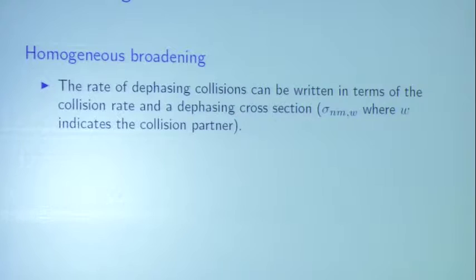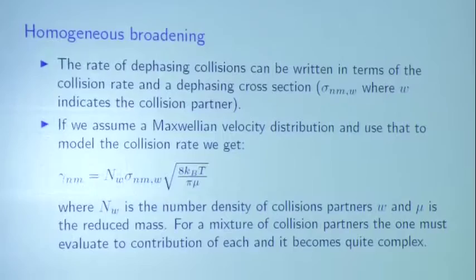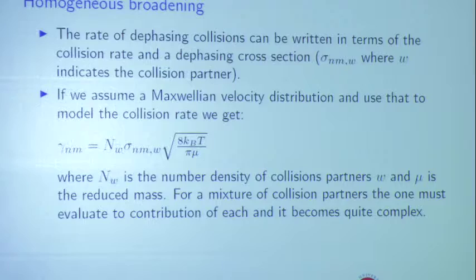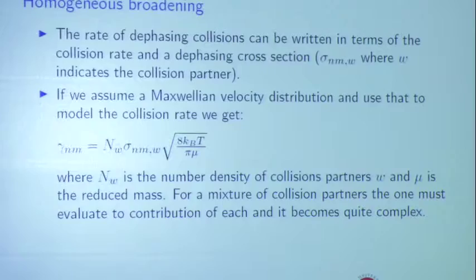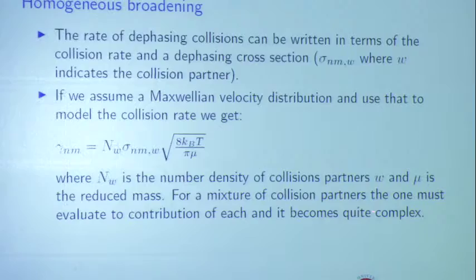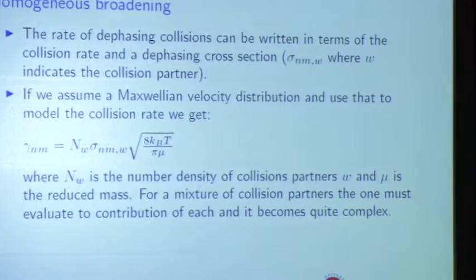The rate of dephasing collisions can be written in terms of collision rate from gas dynamics and a dephasing cross section. Assuming a Maxwellian velocity distribution, you get this expression. This is nice in principle but really it's based on measurements. The trouble is that different collision partners make it really complex — it all has to do with interactions of electric fields, and each molecule has a different potential field around it. Collision-broadened line widths are on the order of 10 gigahertz FWHM at atmospheric pressure. At the pressures of a piston engine, the lines are basically shot — it's depressing.